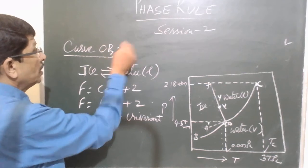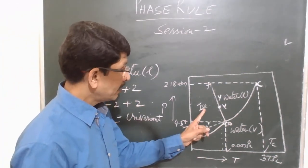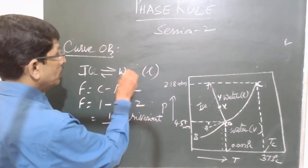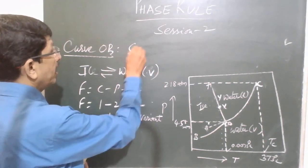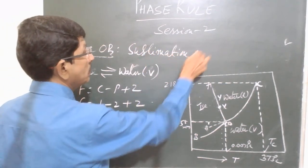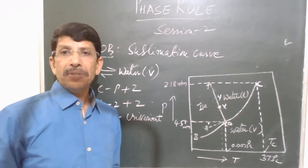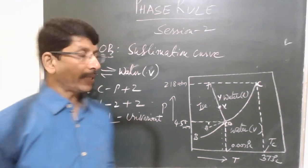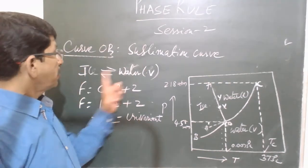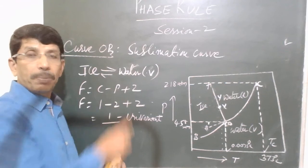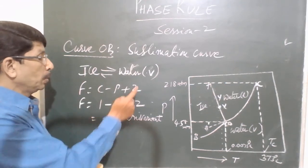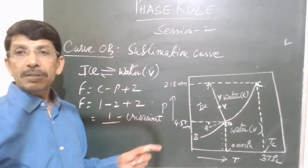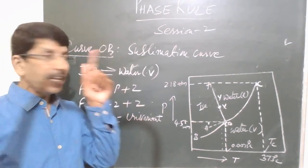Along curve OB — the sublimation curve — solid water (ice) is in equilibrium with water vapor. Solid and vapor are in equilibrium; sublimation means the conversion of a solid directly into gaseous state without passing through liquid state. Along OB it is again a one-component system with two phases, so when we apply phase rule, the degree of freedom is 1, and the system is univariant along the curve OB.